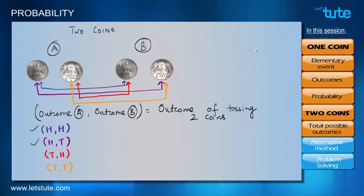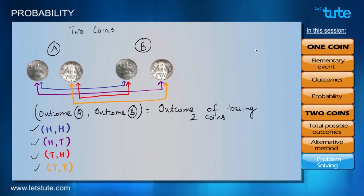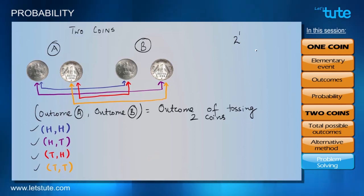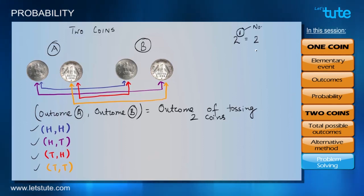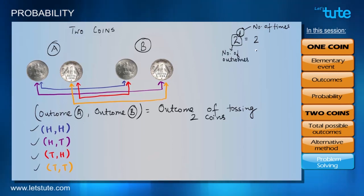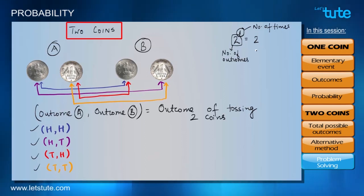There is a faster way to calculate total possible outcomes. A coin toss has two outcomes, so tossing once is 2 raised to power 1, which equals 2. The power signifies the number of times the event takes place and the base tells us the number of outcomes per event. Tossing two coins gives 2 raised to power 2, which equals 2 × 2 = 4.